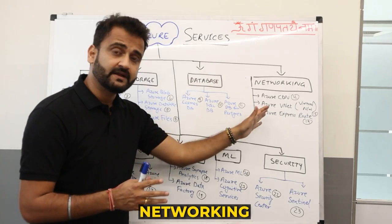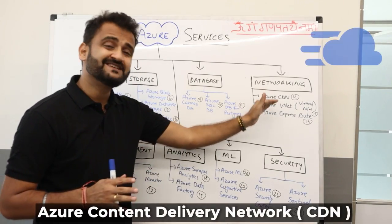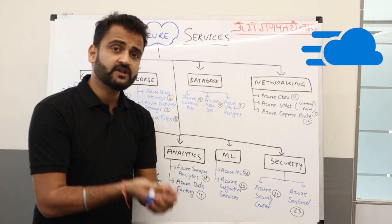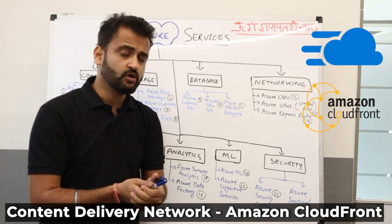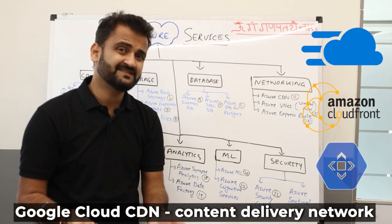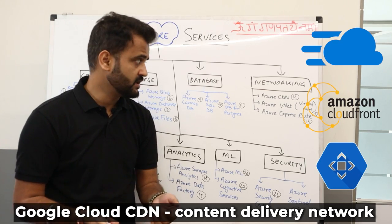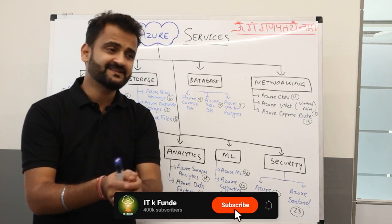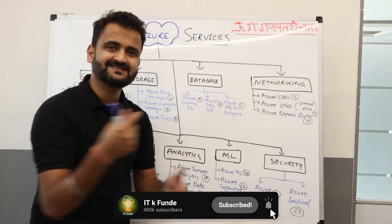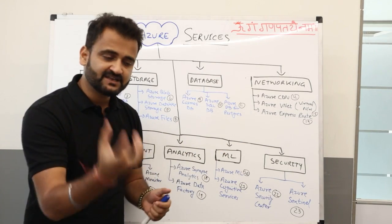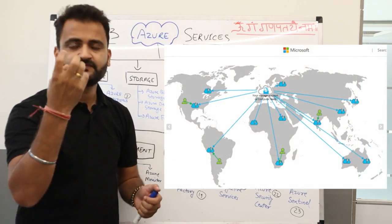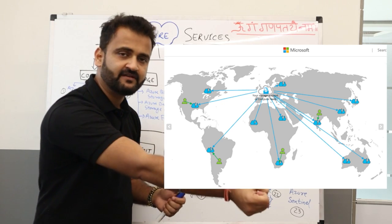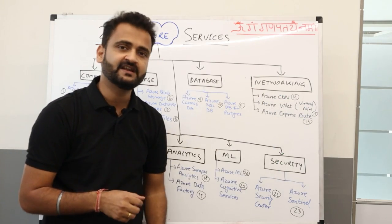Moving to networking, we have Azure CDN — Azure Content Delivery Network. On AWS we have CloudFront and on Google we have Google CDN. CDN delivers services at geographical locations across the globe, serving content right at the edge where the customer is, enabling faster performance.